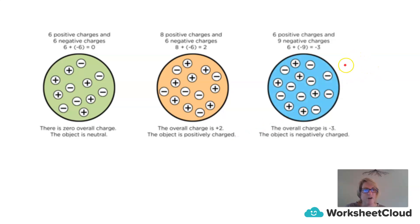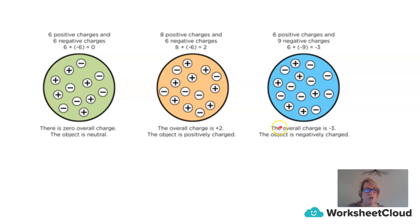In this diagram, we have six positive charges and nine negative charges. Six plus negative nine equals minus three, so the overall charge is minus three, which means the object is negatively charged.